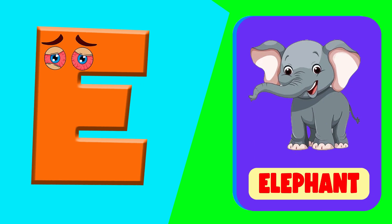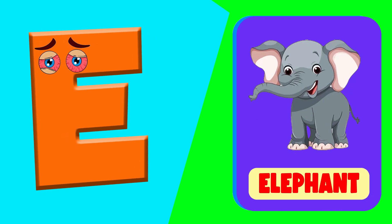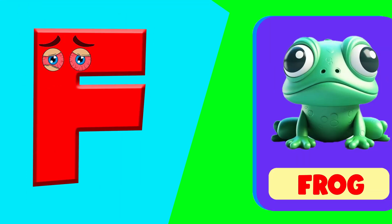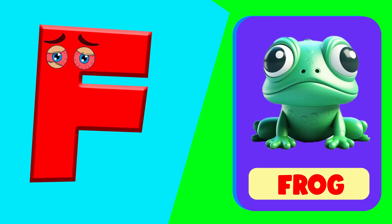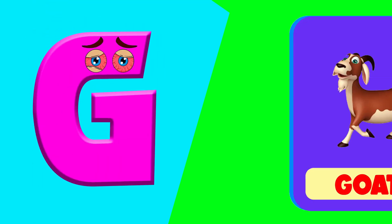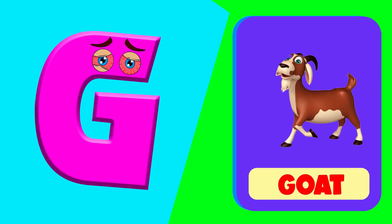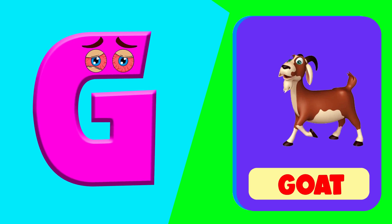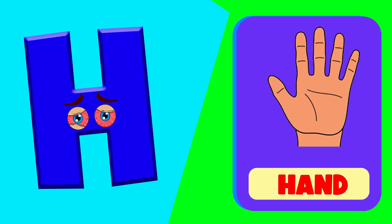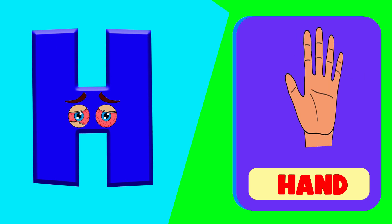E is for elephant. e, e, elephant. F is for frog. f, f, frog. G is for goat. g, g, goat. H is for hand. h, h, hand.